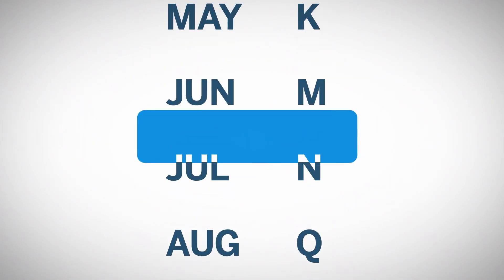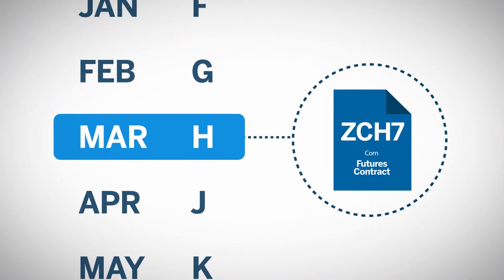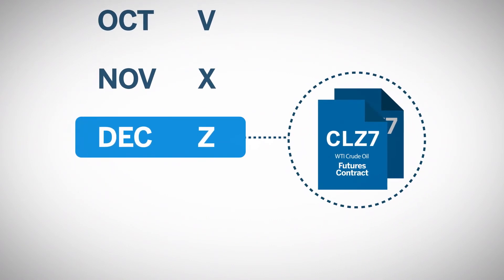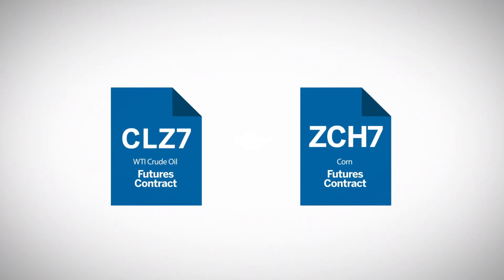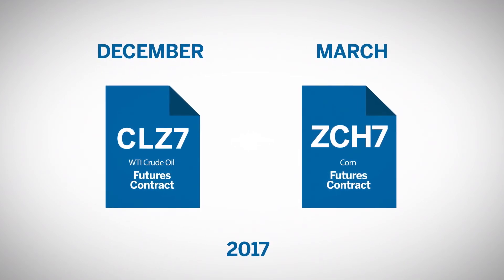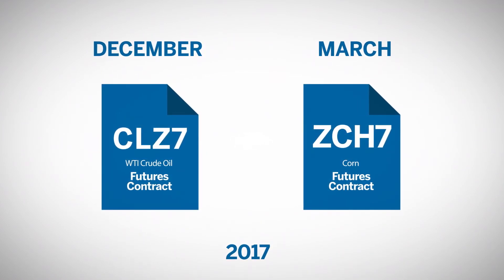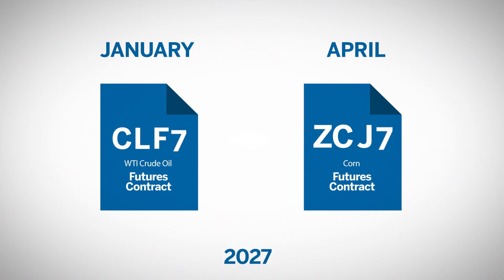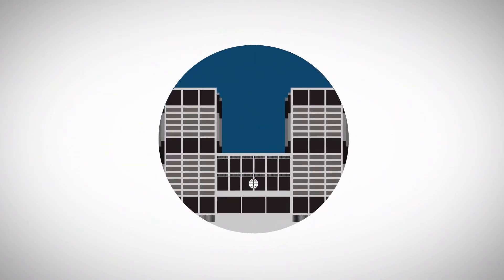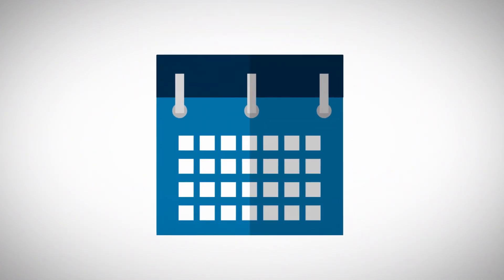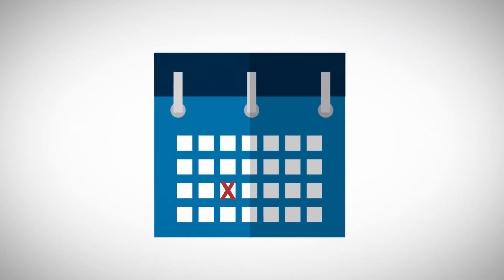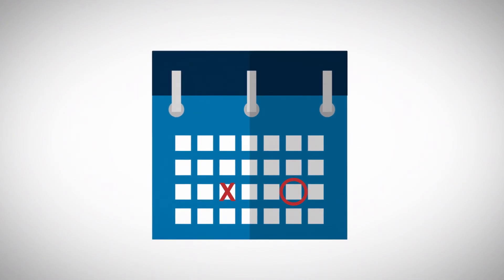Every futures contract is referred to by its delivery month. Traders refer to the March corn contract or the December WTI contract, since this point in the future is germane to the value and execution of the contract position. Depending on the contract market, delivery can be anywhere from one month to several years in the future. The exchange specifies when delivery will occur within the month and when a given contract initiates and terminates trading. Typically, trading for a contract is halted a few days before the specified delivery date.